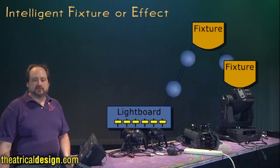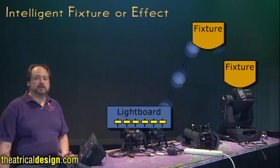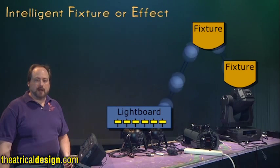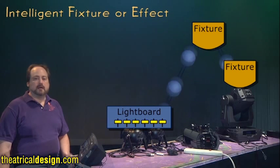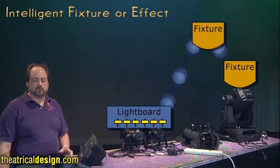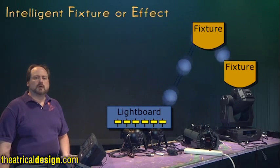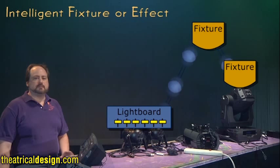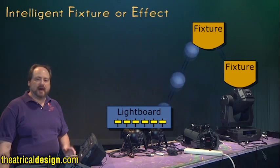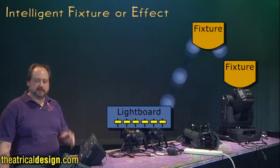Many DMX devices are capable of receiving and utilizing numerous control channels at once. This capability is accomplished by setting the base address or the main DMX address for the piece of equipment, in which case the remaining attributes use the sequential control channels. Regardless of how many channels a particular device uses, a full set of control information is passed to it — it simply ignores the information not addressed specifically to that device.